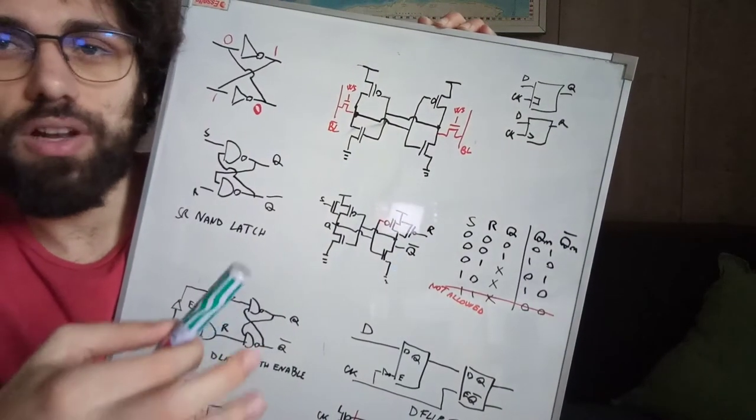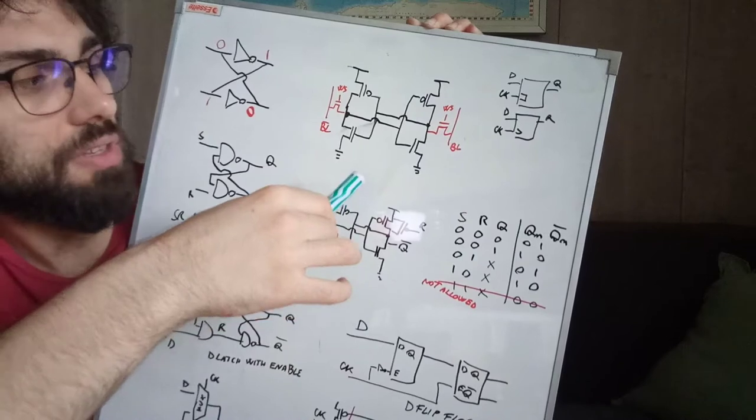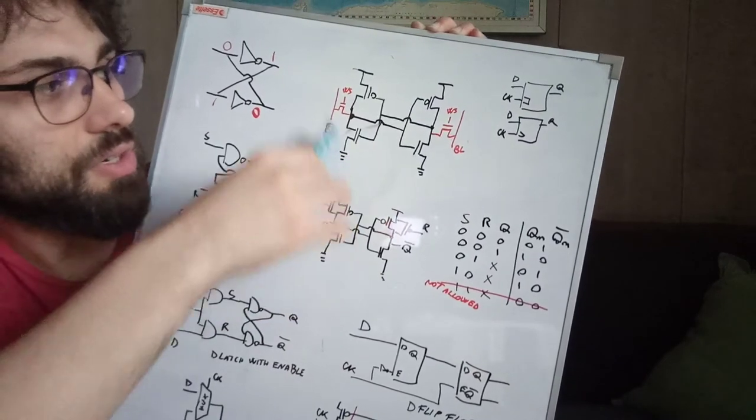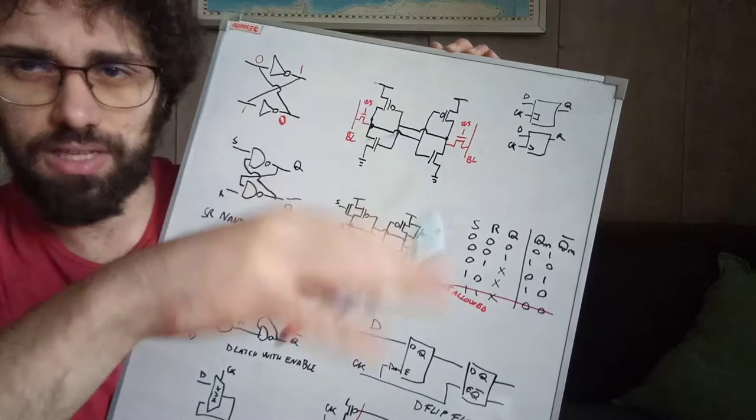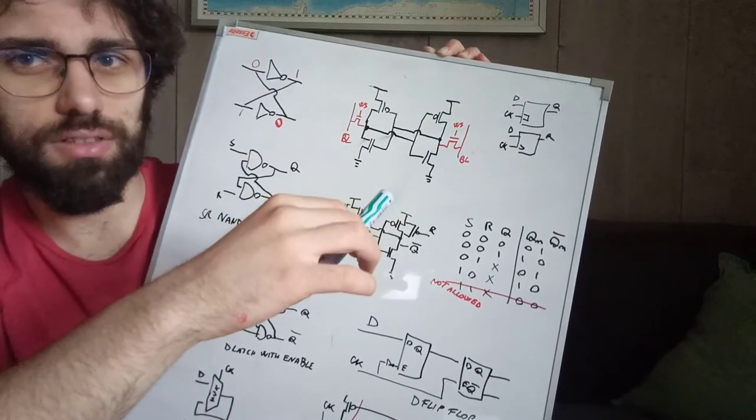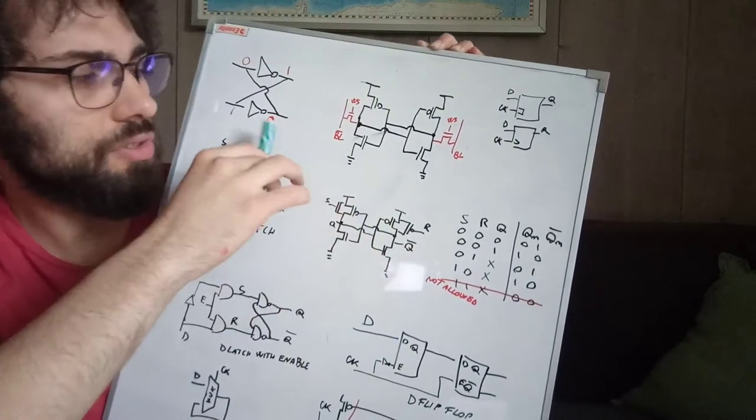RAM. So a RAM is a memory that's configured in this way where you have word select and the bit line, and when you select it you switch the content of those not-to-not gates.